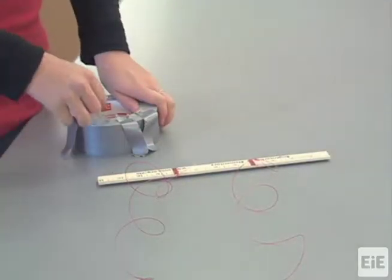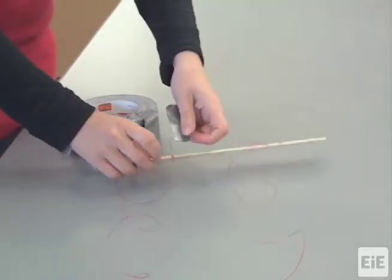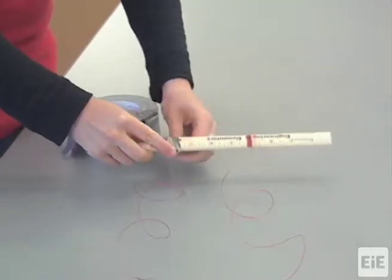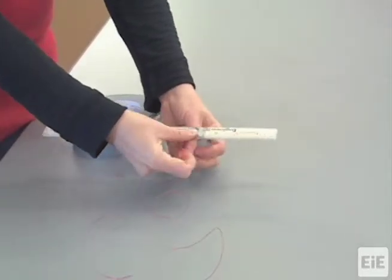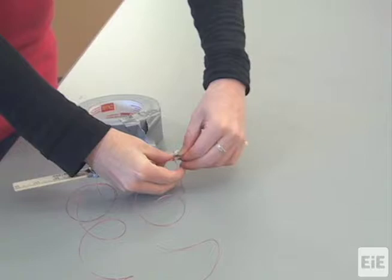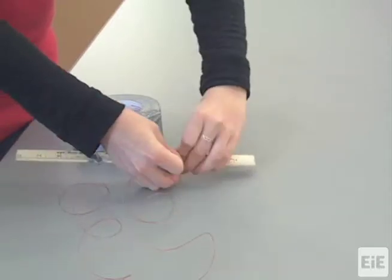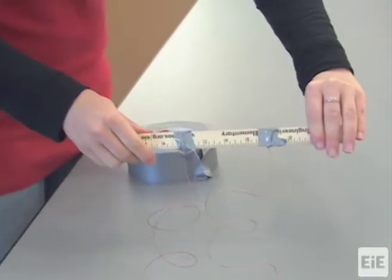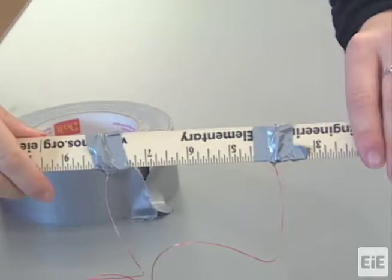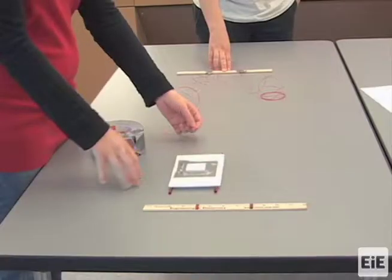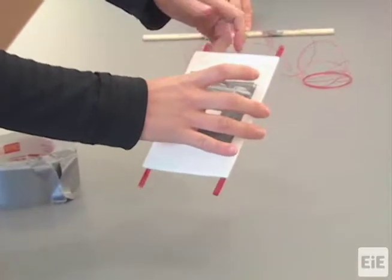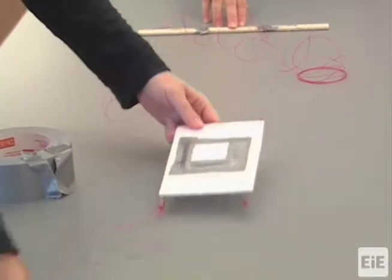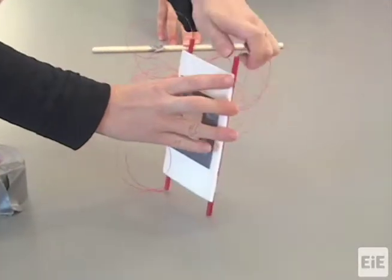Secure the fishing line knots to the ruler by taping over them with masking or duct tape. With the raft oriented so that the straws are facing down, feed one fishing line through one of the straws and the other fishing line through the other straw.